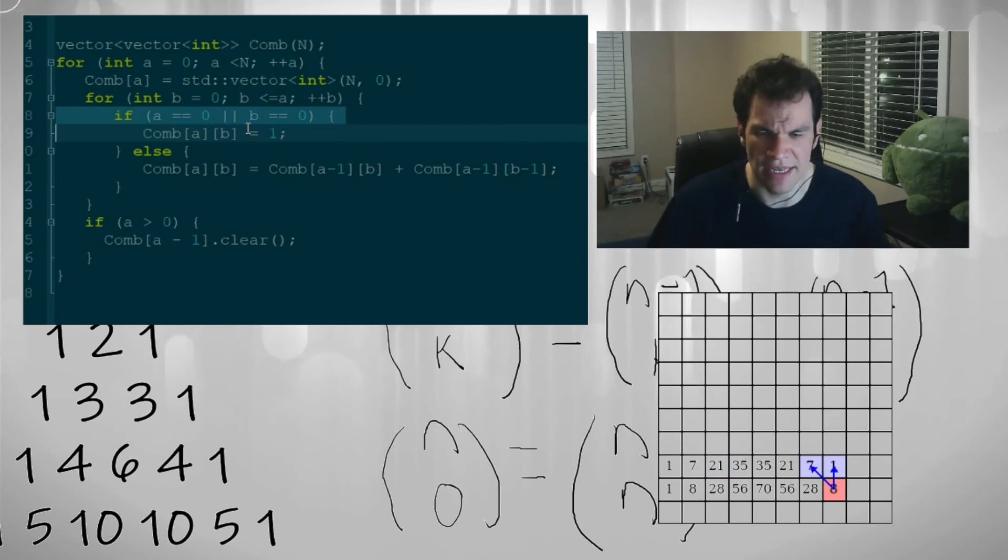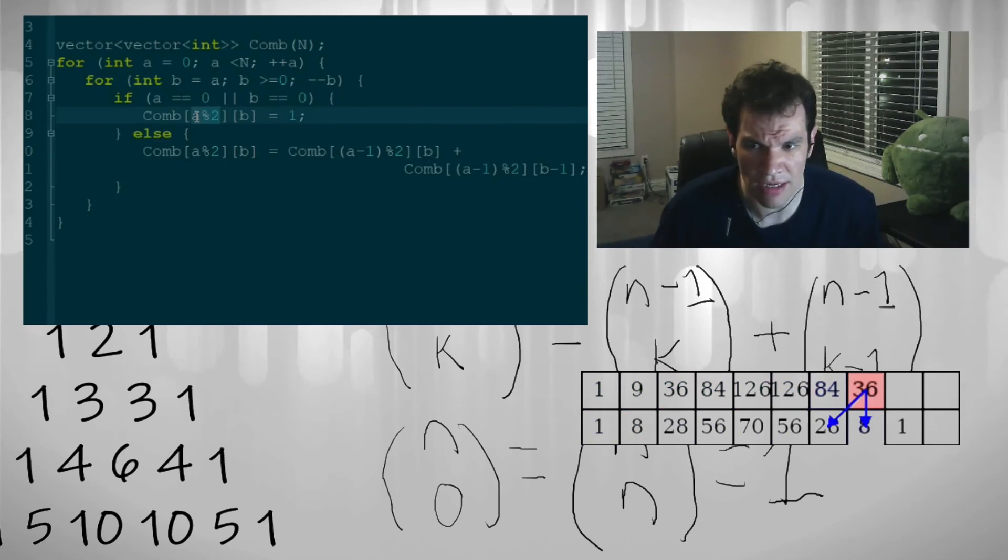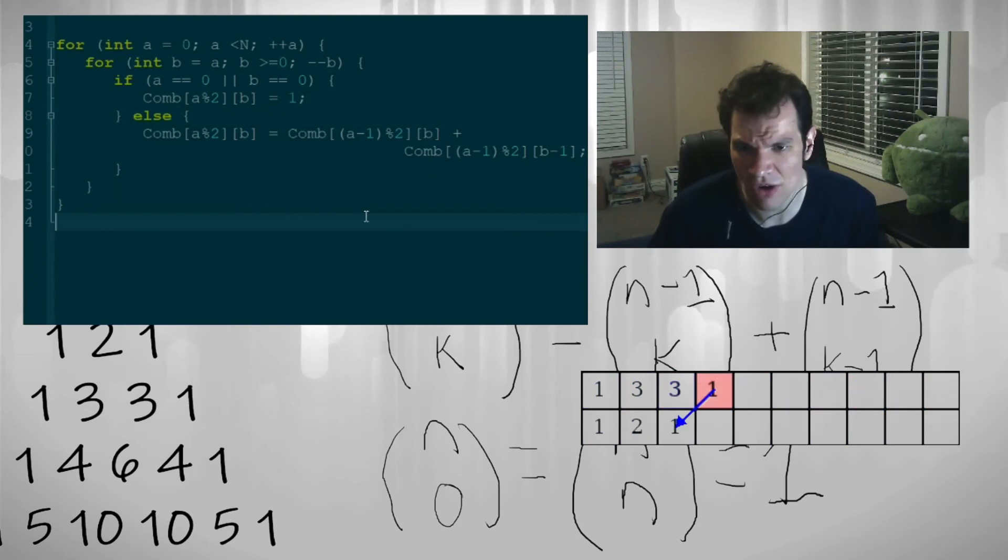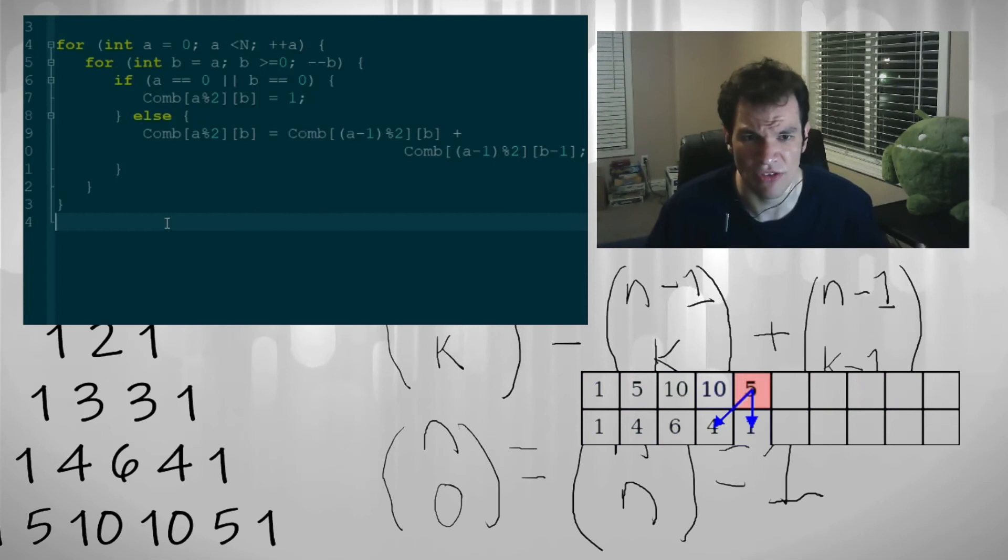Now, by doing it in this way, just taking the modulo two of each index. Then, it only uses two rows of the whole table. So, we don't even need the whole table. And, you can appreciate also that this code is much smaller than the previous code that was just asking for new vectors and removing the previous vectors.